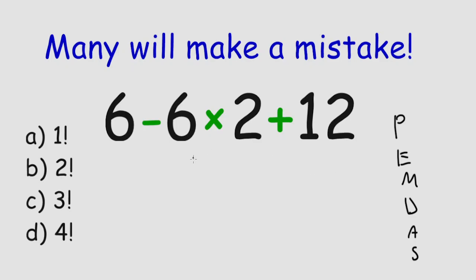So we start off with the multiplication, 6 times 2, we get 12, so it's 6 minus 12 plus 12.